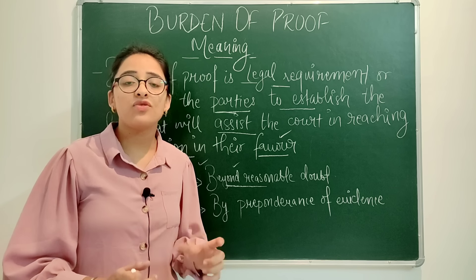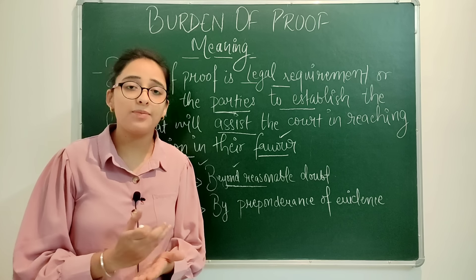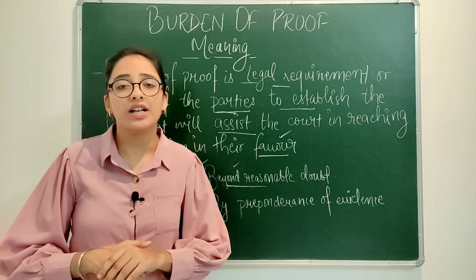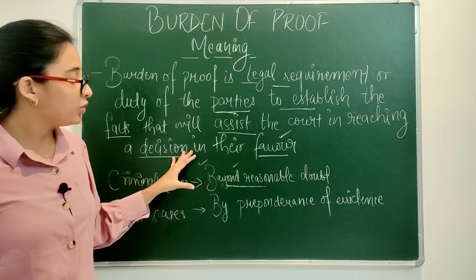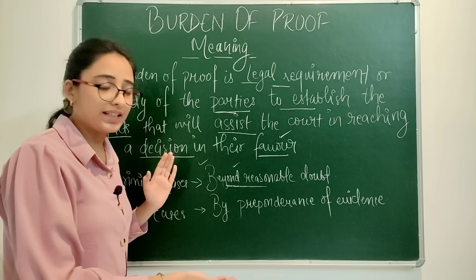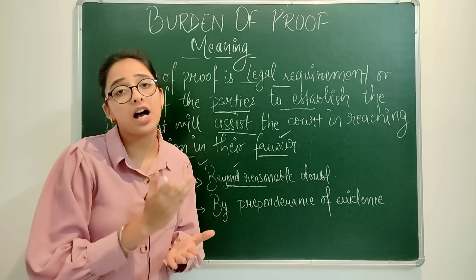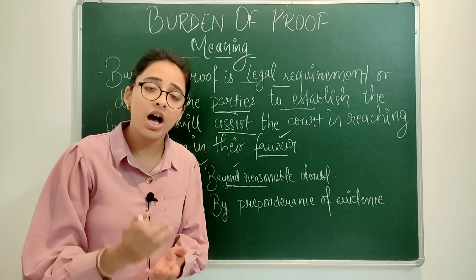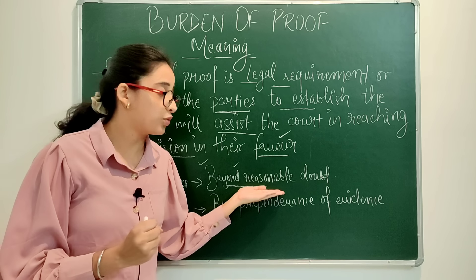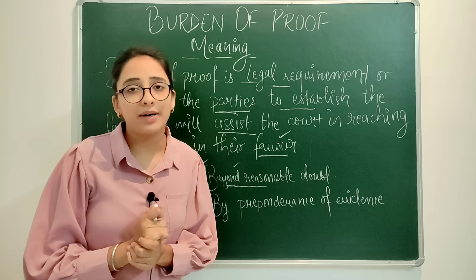But this is not the case with graver offenses like dowry death or rape offenses. The general rule is that in criminal cases the burden of proof is very high — beyond reasonable doubt — we have to prove that the accused has done the crime. If there is a little uncertainty, then the accused will not be found guilty.